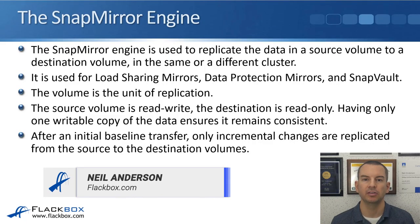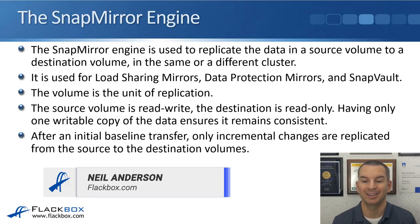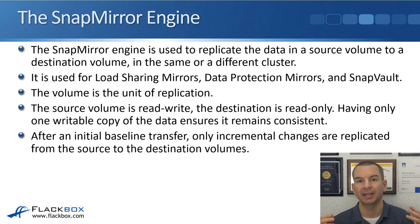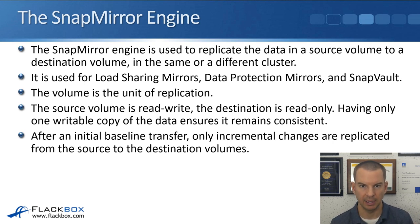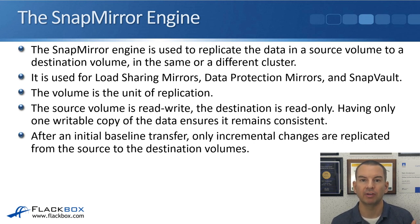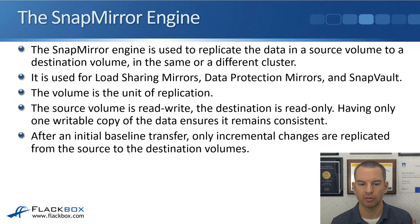The SnapMirror engine is used to replicate the data in a source volume to a destination volume, and it can be in the same or a different cluster. It's used for load sharing mirrors, for data protection mirrors, and also for SnapVault. When we use the SnapMirror engine, the volume is the unit of replication. Back in the old 7-mode operating system, you could replicate either at the Qtree or the volume level, but in cluster mode, it's always at the volume level. Qtree replication is not supported.